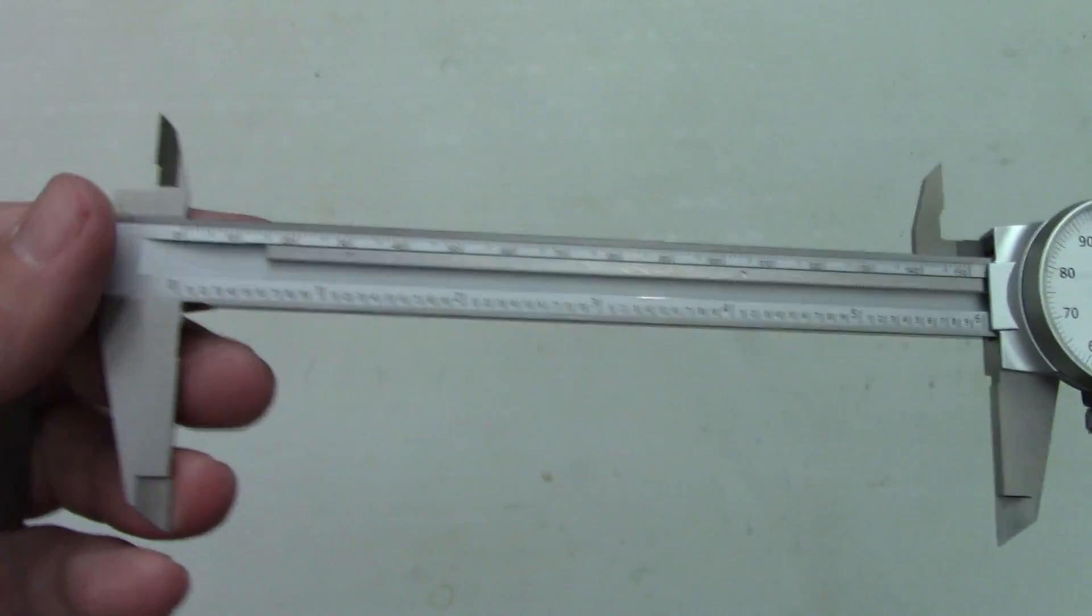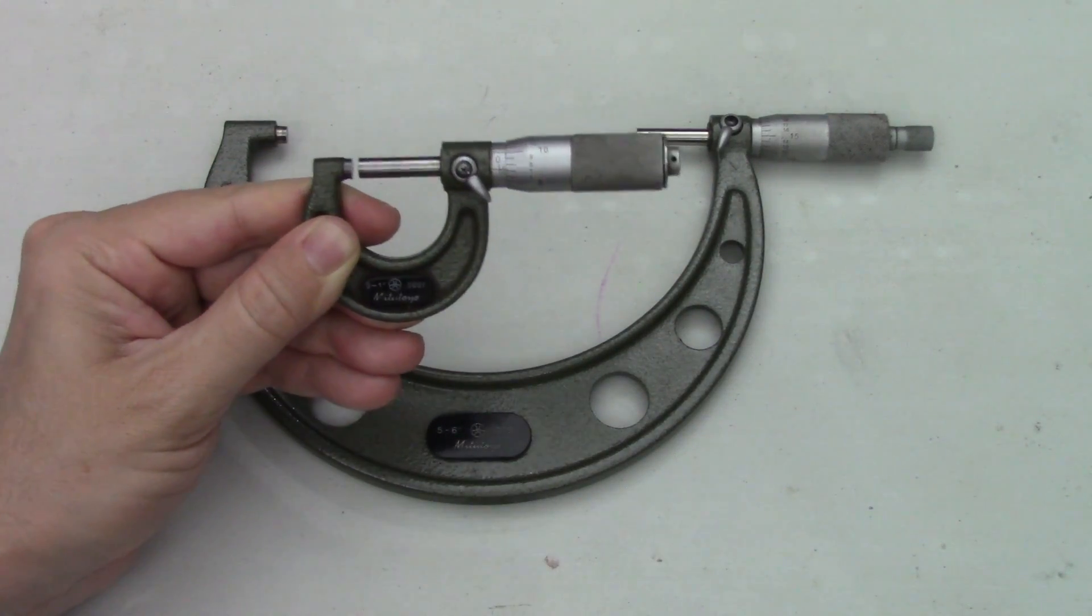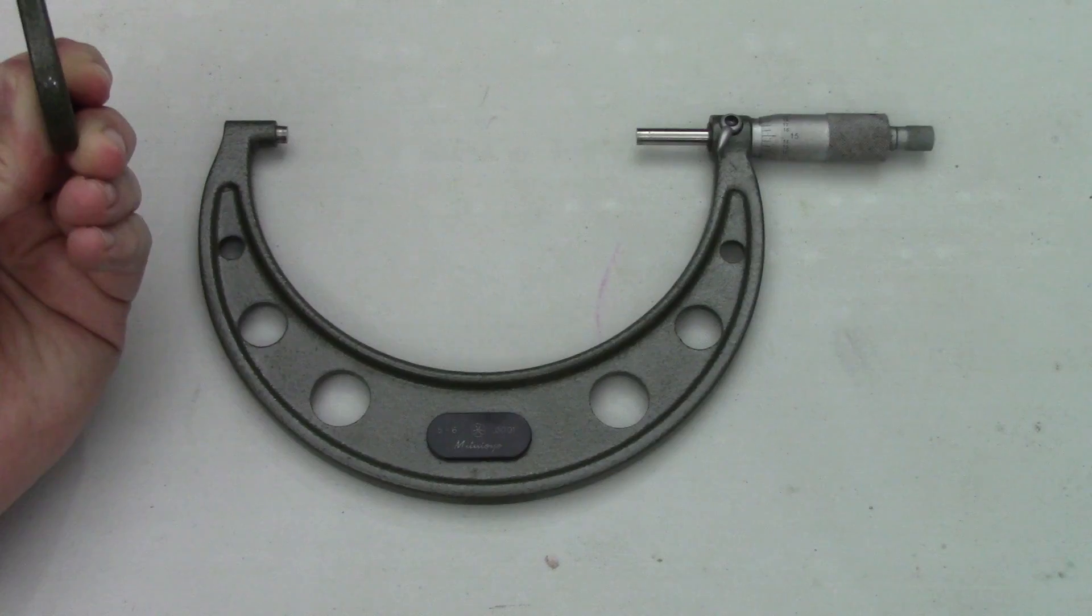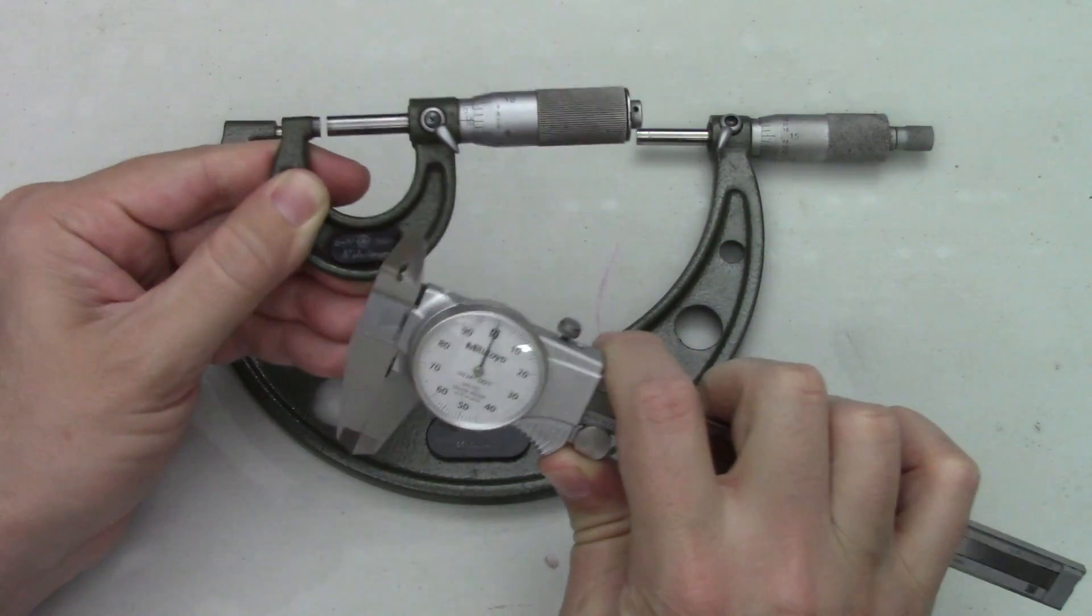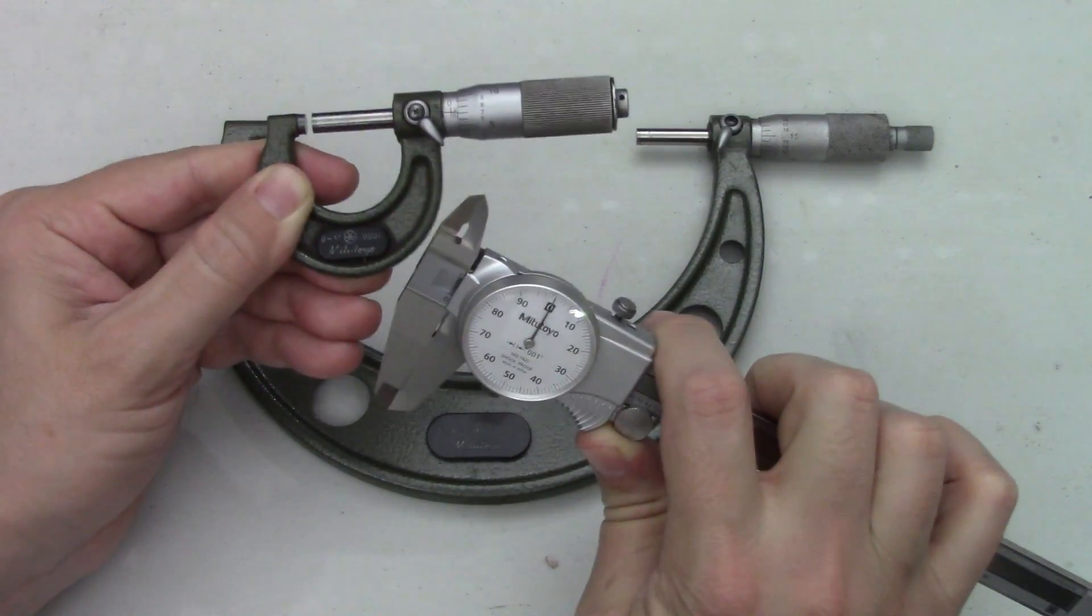This is the reason why micrometers only have a travel of 1 inch or 25 millimeters, regardless of their frame size. Overall, calipers are not as accurate as micrometers and really should not be relied upon for tight tolerance work.